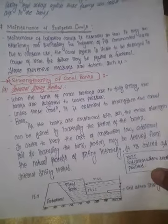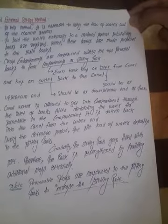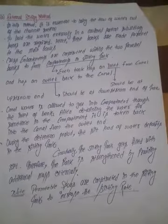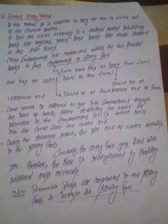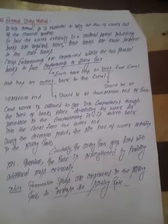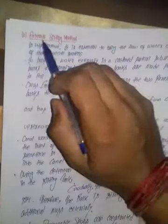Now we proceed with the external silting method. In this method, water is held externally in a confined portion by compartments or silting tanks. Canal water is allowed into the compartment tanks, and after detaining the water from the outside, the silt load deposits in the silting tank. Some spouts are also constructed to increase the silting rate.